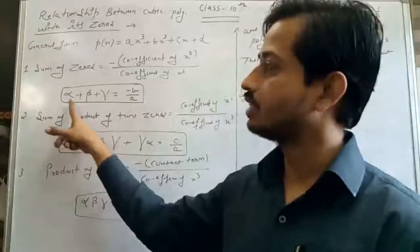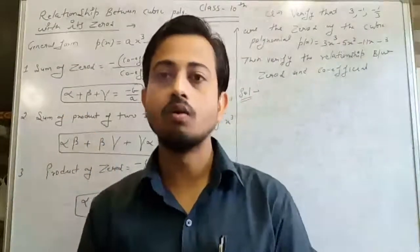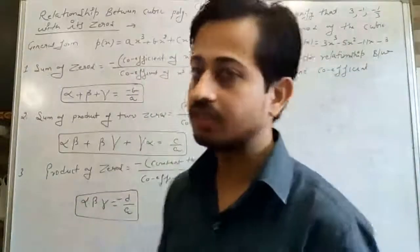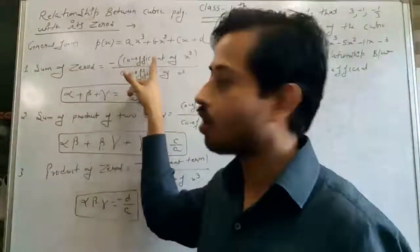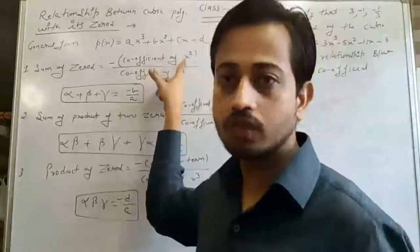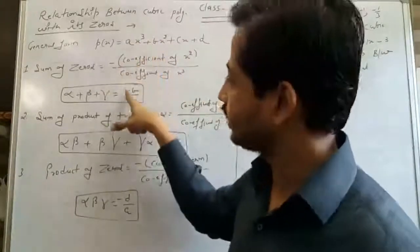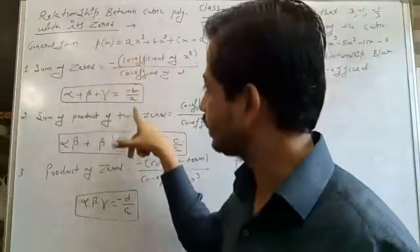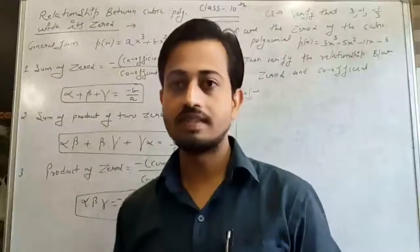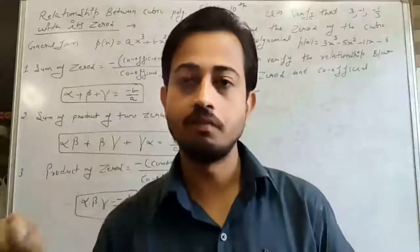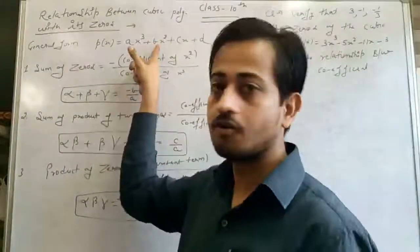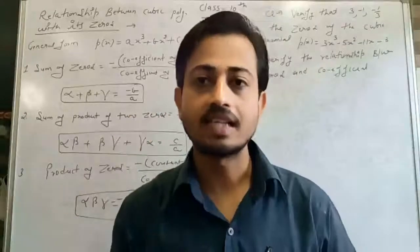We have three relations. First relation is sum of zeros — if we add all the zeros, the same result is obtained using the coefficient method: negative coefficient of X² divided by coefficient of X³. So alpha plus beta plus gamma is equal to minus B by A, where B is coefficient of X² and A is coefficient of X³.